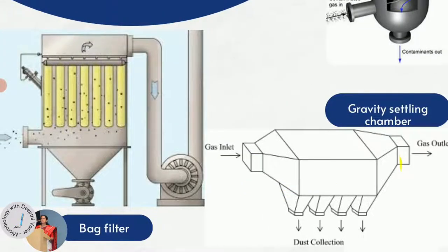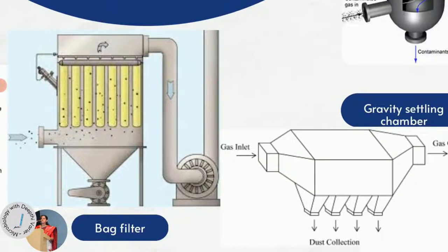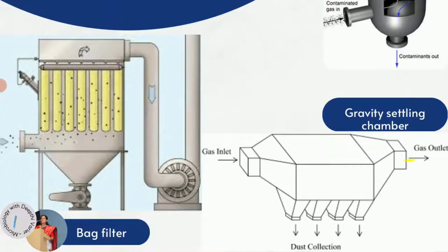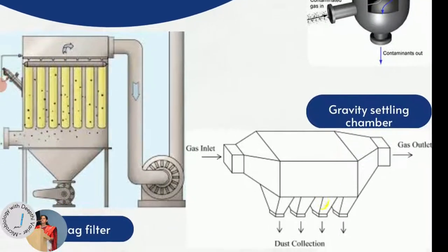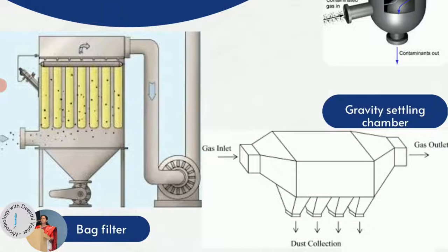The next one is a gravity settling chamber. It has low efficiency compared to others but is very cheap, which is why many industries employ it. The gas containing particles comes in through an inlet, and the entire chamber slows down the gas flow so particles can settle down while clean gas comes out. The air moves at very slow speed so particles settle by gravity, but because only gravity is at play, this process is not very efficient.